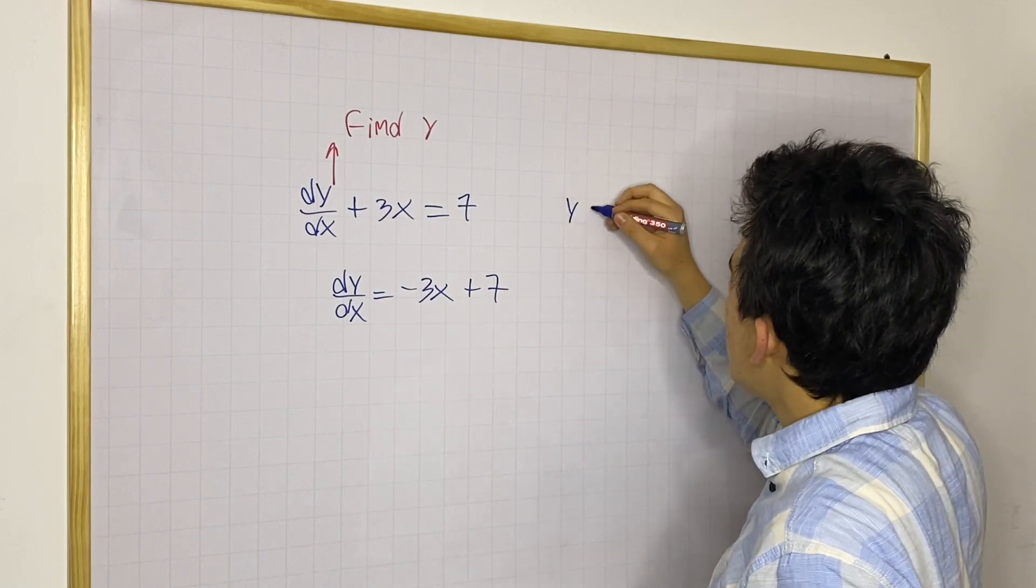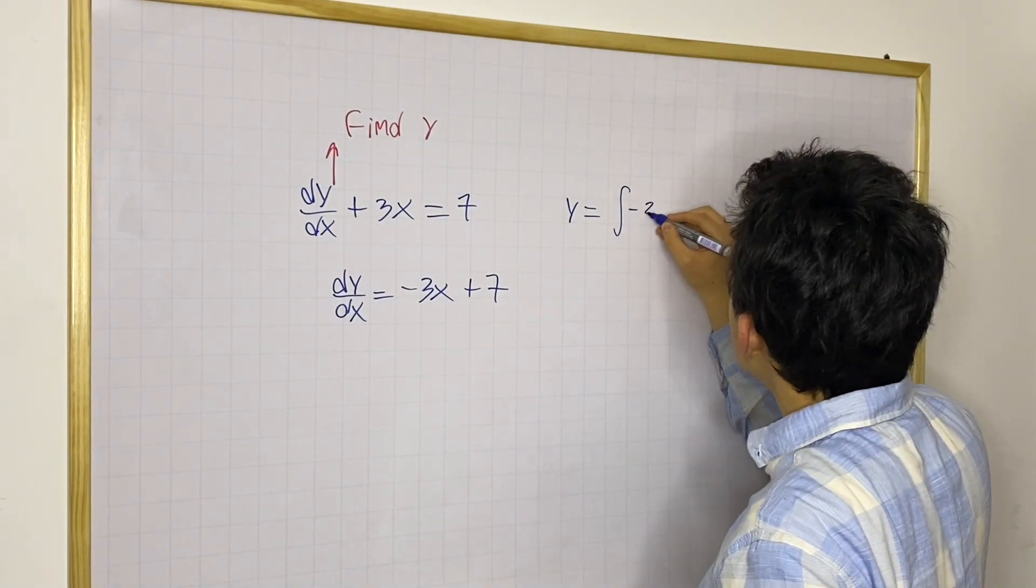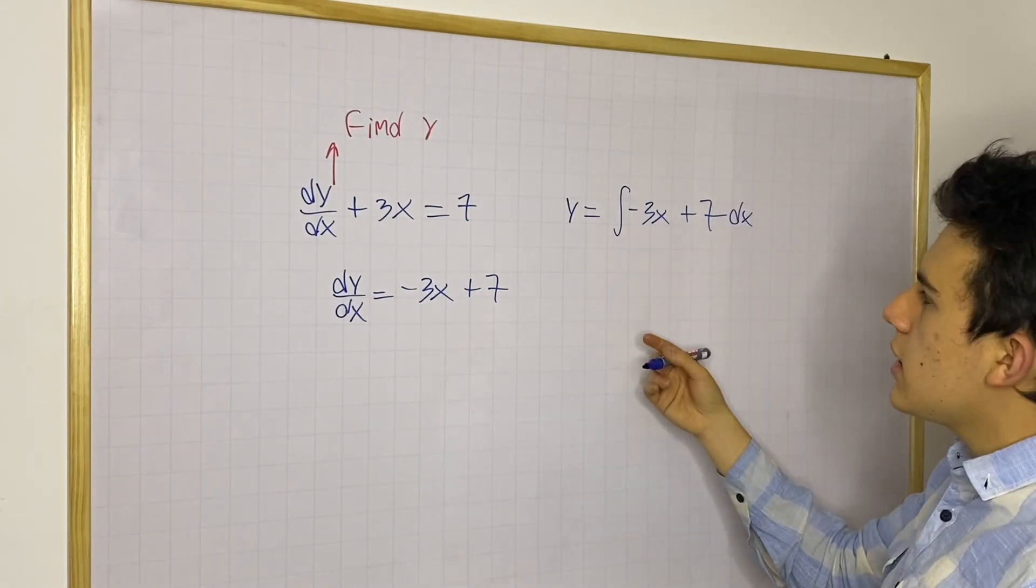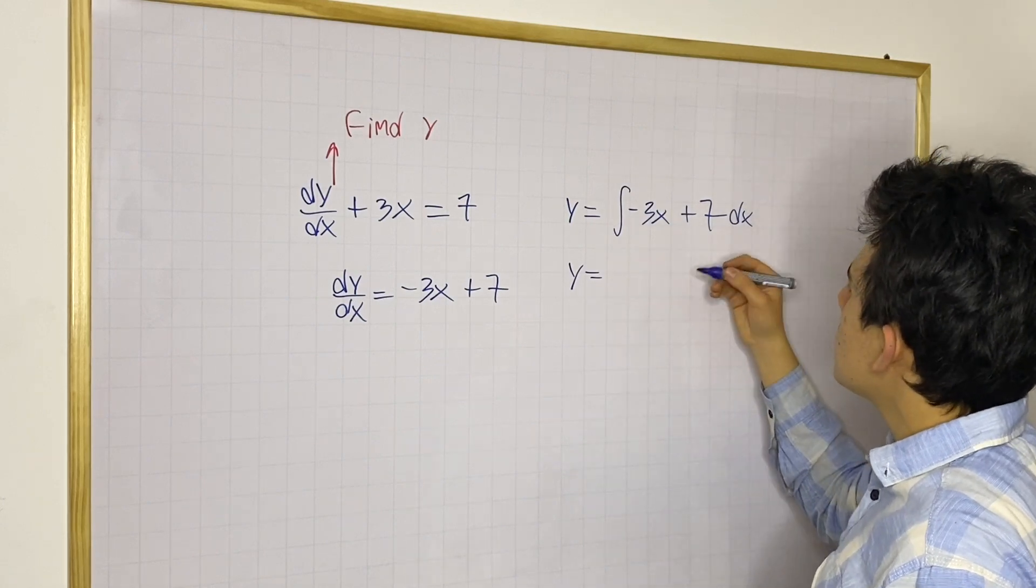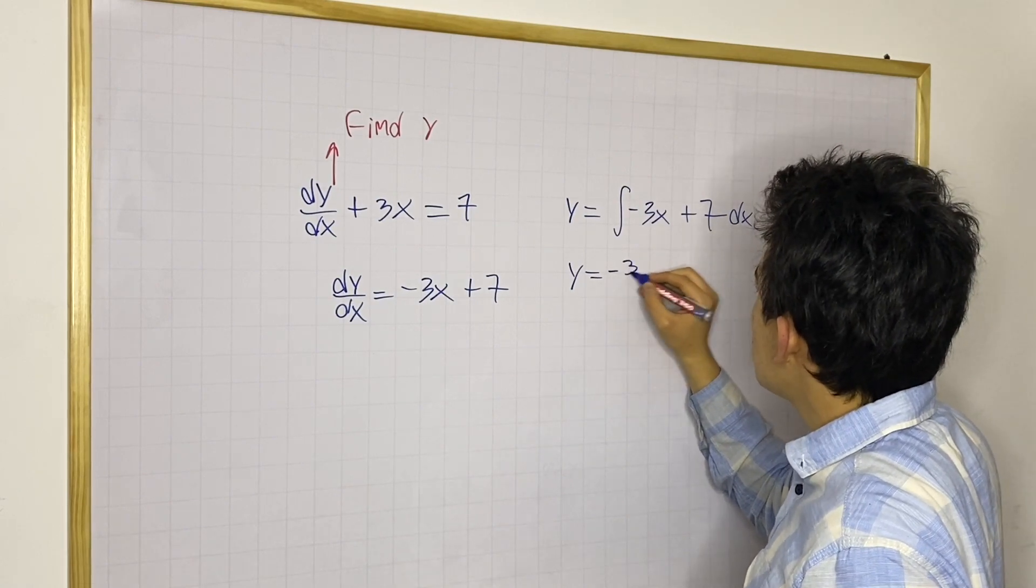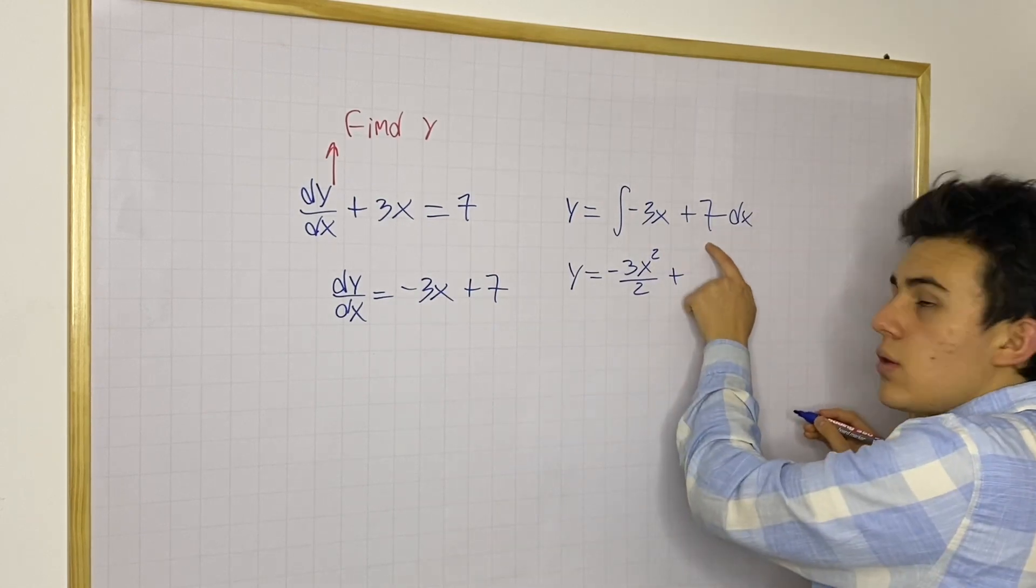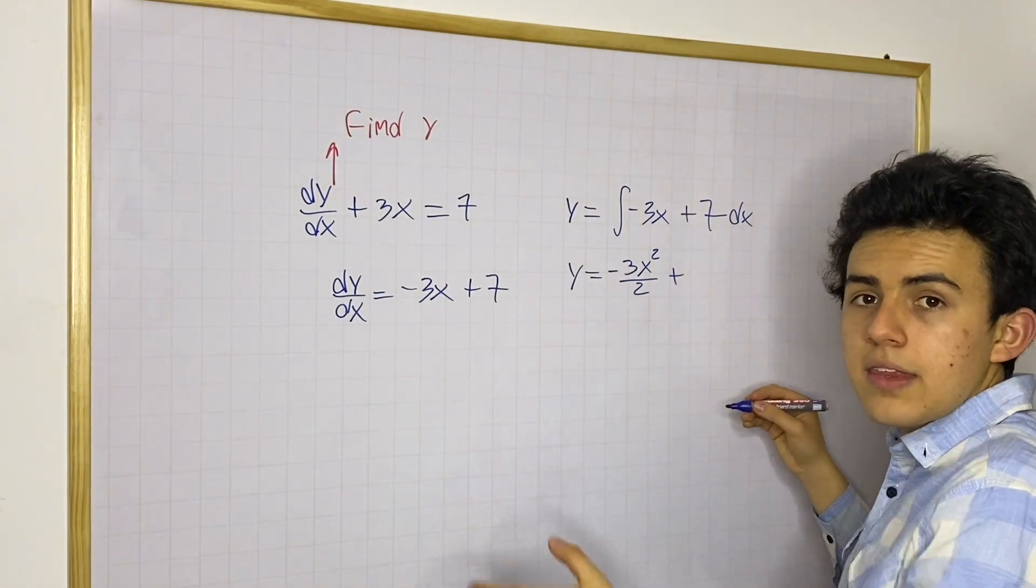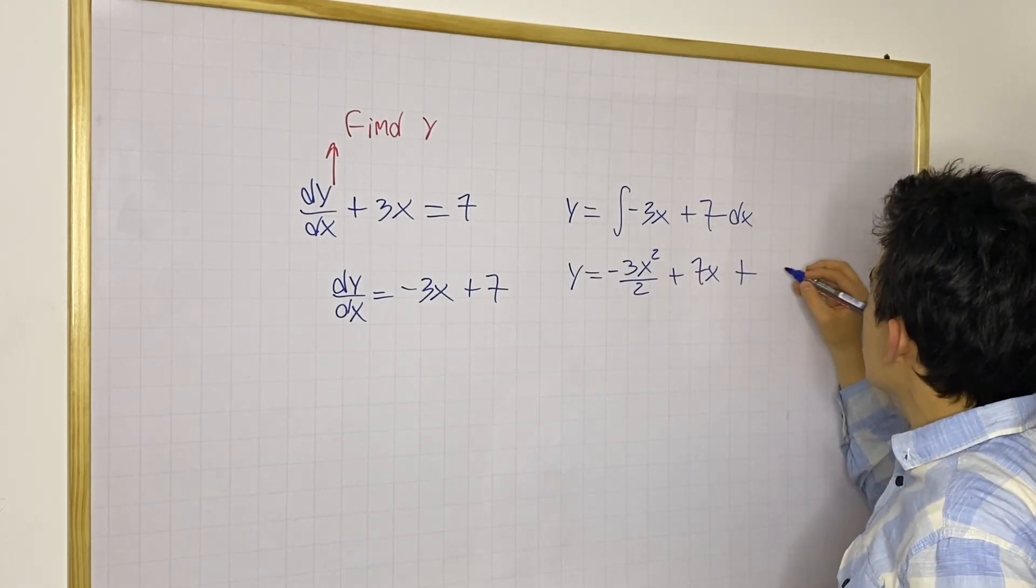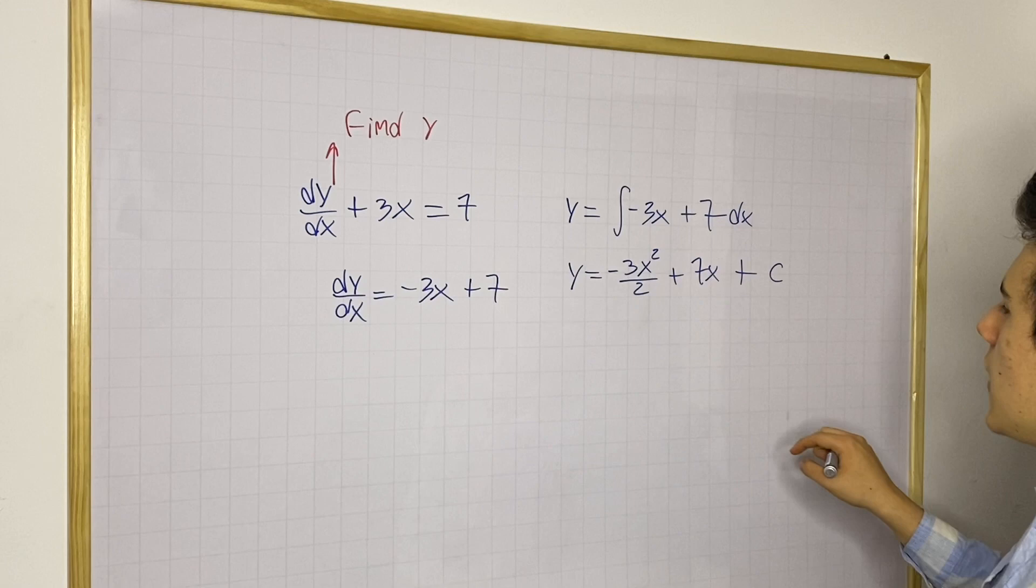So we could say that y is going to be equal to the indefinite integral or the anti-derivative of minus 3x plus 7 with respect to x. And now we just need to evaluate this integral. So we're going to have that y is going to be equal to, we just simply add one to the exponent and divide by that exponent. So this is going to be minus 3 times x squared over 2 plus 7. And remember when you have a constant, you need to add x because when you took the derivative, that x went to 1, so you just got the constant. So this is going to be 7x. And don't forget, plus c. Any constant you have will go to 0 so it won't appear here. Now this is y basically.